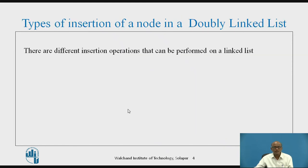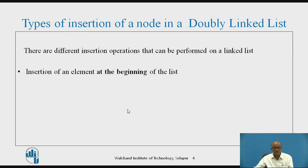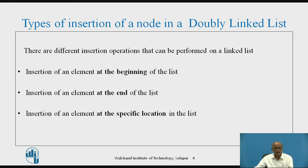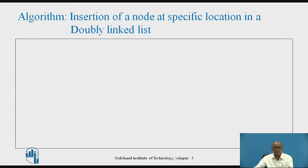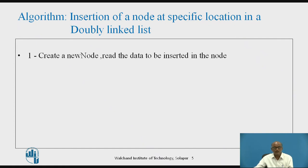The types of insertion: as mentioned, we have already seen how to insert at the beginning and how to insert a node at the end. Today we will focus on how to insert at a specific location. The algorithm: initially we will create a new node, then we will read the data to be inserted into the node.